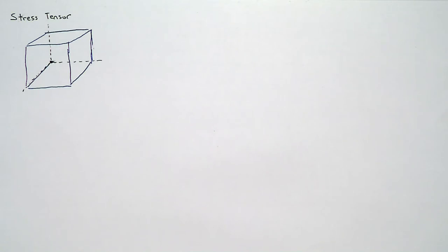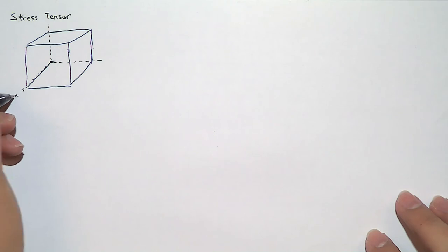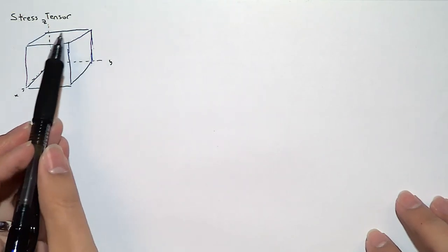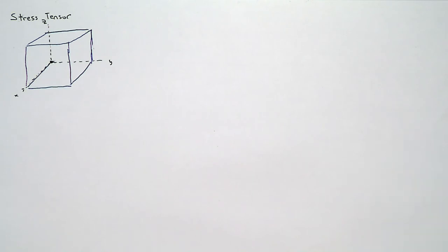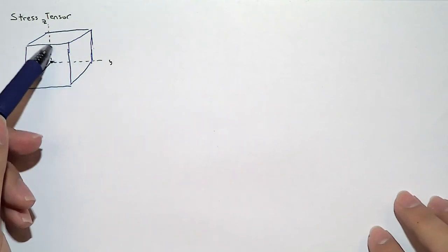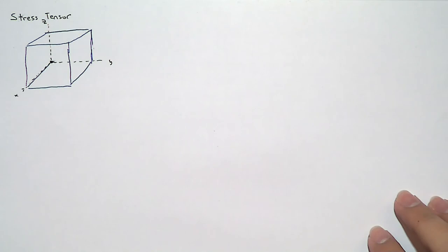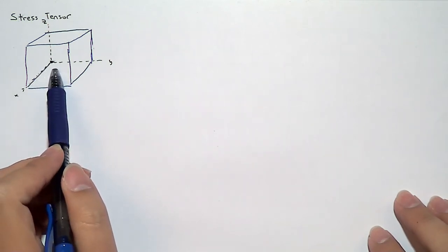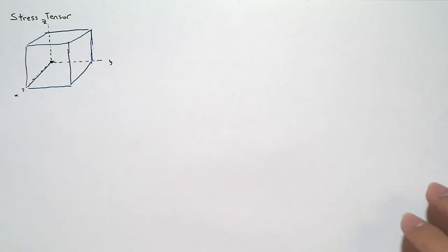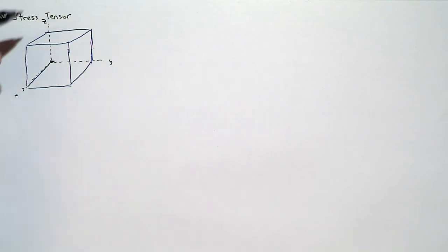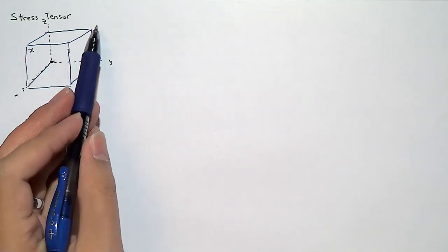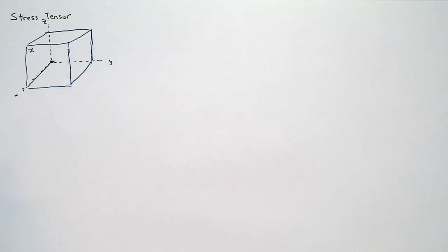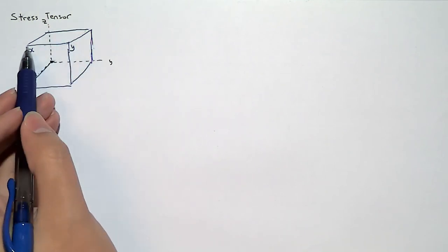To identify the faces on this fluid particle, I'll give them names: x, y, and z, corresponding to the direction their area vectors point. The area vector for the face pointing in the x direction makes it the x face. The face whose normal points in y is the y face, and the one whose normal points in z is the z face. On the other side, we have negative x, negative y, and negative z faces.